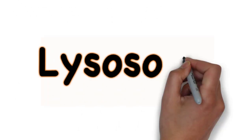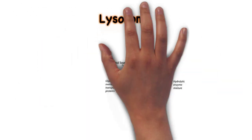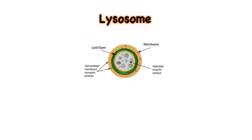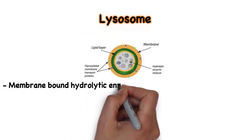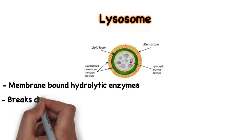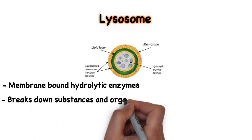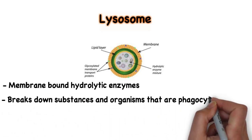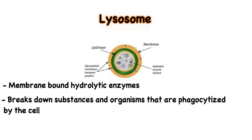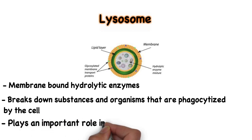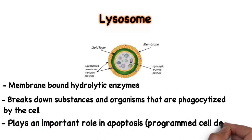Lysosomes are vesicles containing hydrolytic enzymes that break down substances or organisms that are phagocytosed by the cell. They also play an important role in apoptosis, which is programmed cell death.